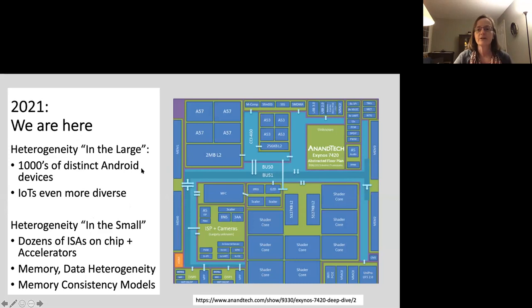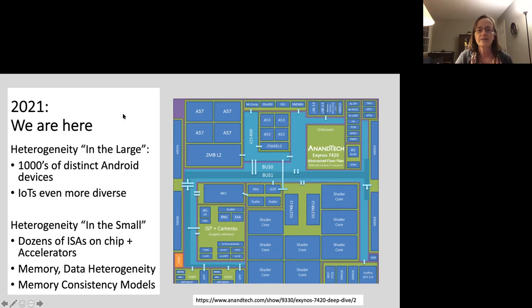But this is where we are now. This chip photo is what chips look like inside your cell phone or laptop. There are some general-purpose cores on here, but also a number of very specialized cores for the radio, for face recognition, for graphics, and so forth. We have what I would call heterogeneity in the small — meaning even on a single chip, there's no longer just one instruction set architecture or one assembly language. There are actually dozens of instruction set architectures or assembly languages on this one chip.